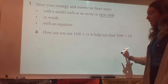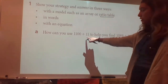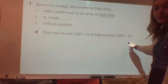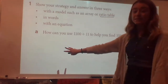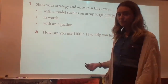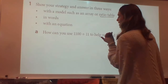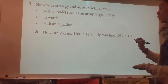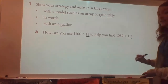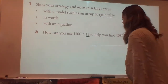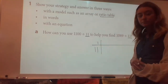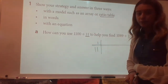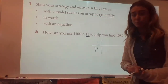Let's read number 1A: How can you use 1100 divided by 11 to help you find 1089 divided by 11? I'm going to use a ratio table over here and then leave this space for my words and my equation. So I have to figure out 1100 divided by 11 first to even figure out how it connects to 1089 divided by 11. So I'm going to put 11 — it seems to be our number — in a ratio table. I'll start with 1 and 11, and I want to try to get to 1100 first. Let's start with a nice round number that we know how to multiply by.